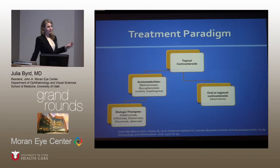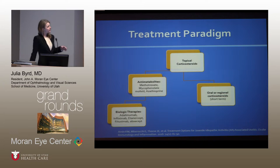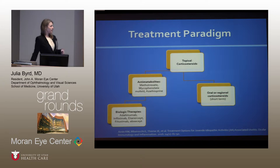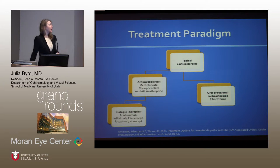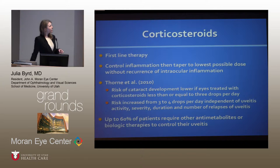This is a simplified version of the treatment paradigm: topical steroids are the first-line treatment, but as Dr. Vitale mentioned, there are complications of using these long term. If topical steroids aren't controlling the inflammation, we move to anti-metabolites — most commonly methotrexate — and then add biologic therapies or use them in place of the anti-metabolites. There is some role for oral or regional corticosteroids, but that has to be short term. The goal is to eliminate inflammation and keep patients at the lowest dose possible, tapering off as soon as you can without having intraocular inflammation recur.